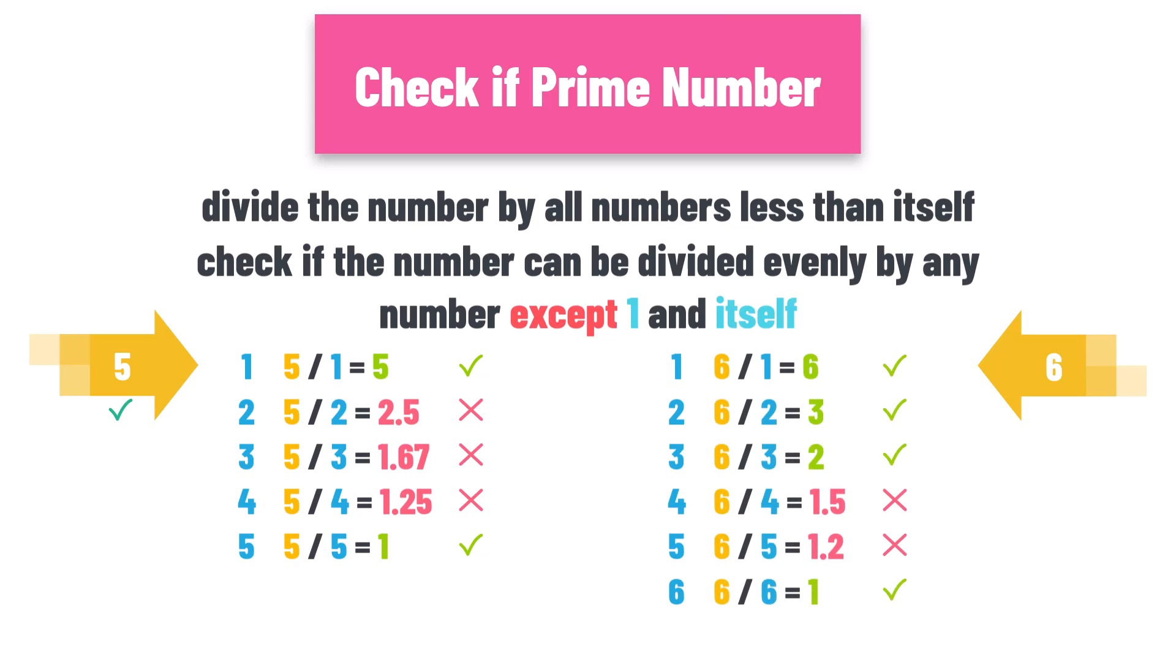As you see, we can divide the number evenly by 1 and itself. But we can also divide 6 evenly by 2 and 3. So, we can divide the number 6 by other numbers than 1 and itself, therefore number 6 is not a prime number.